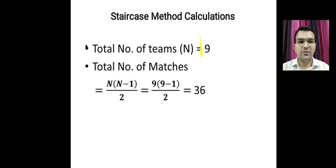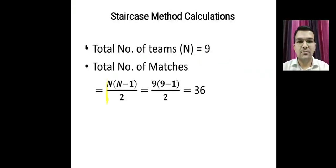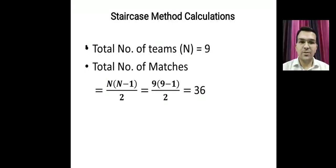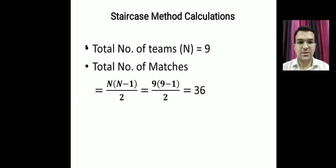We are going to make a fixture using the staircase method for nine teams. If the number of teams is nine, the formula to calculate the number of matches is n(n−1)/2, and we get 36 matches.